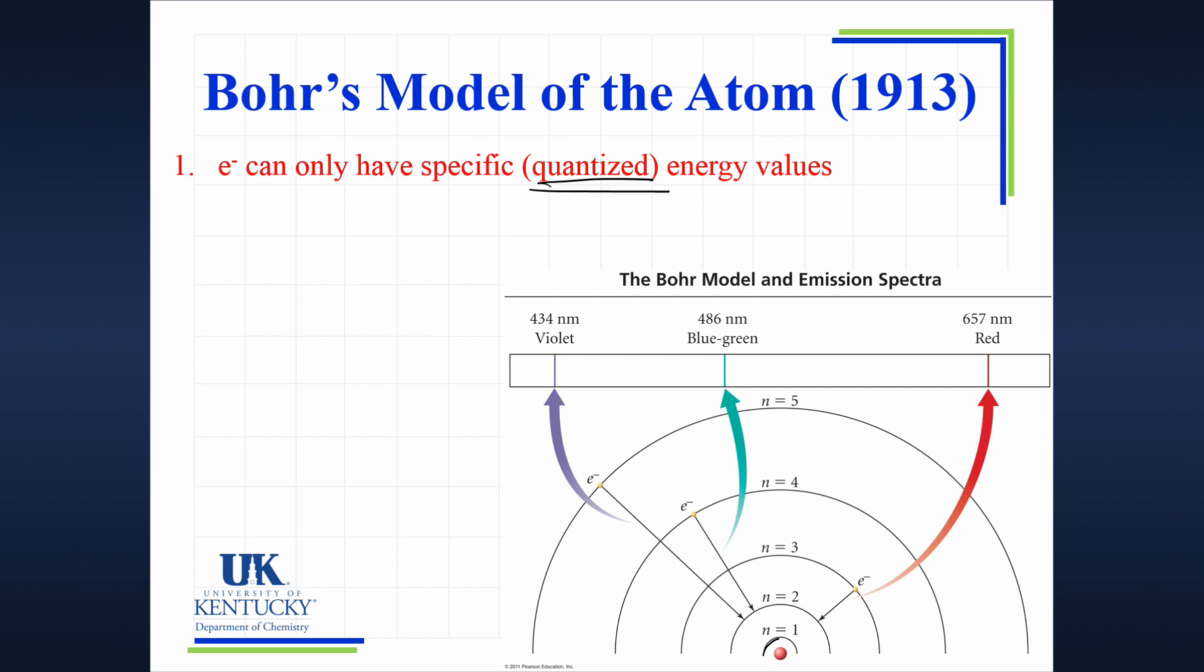How does this? We'll keep on going. So once the electron is in an energy state that's higher up, light is emitted when the electron moves from one energy level to another.